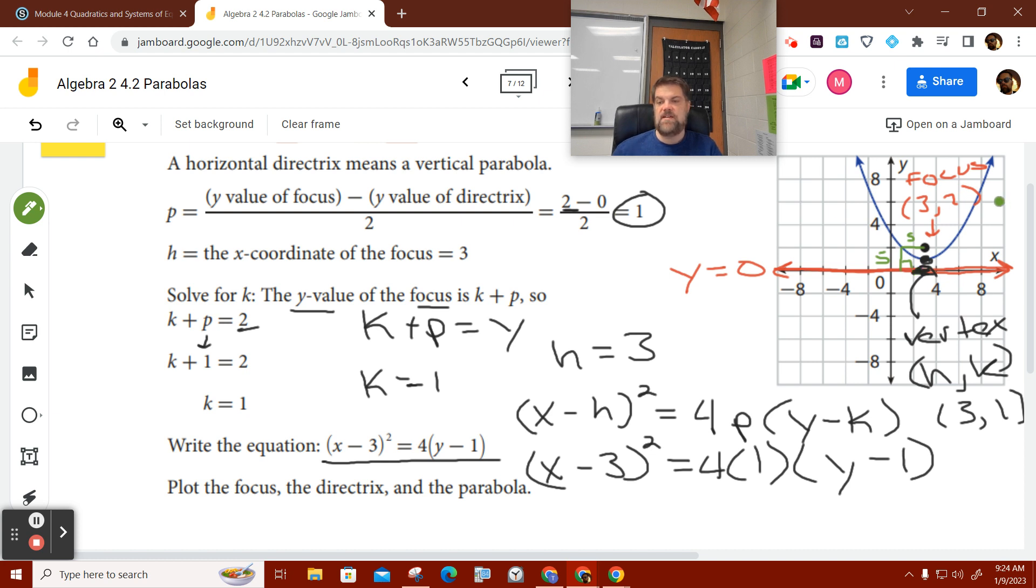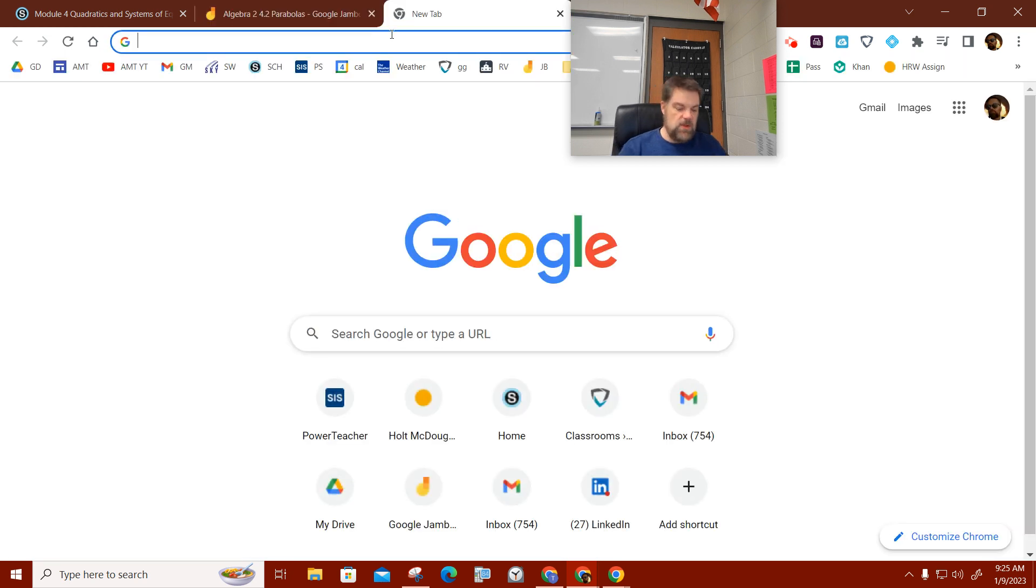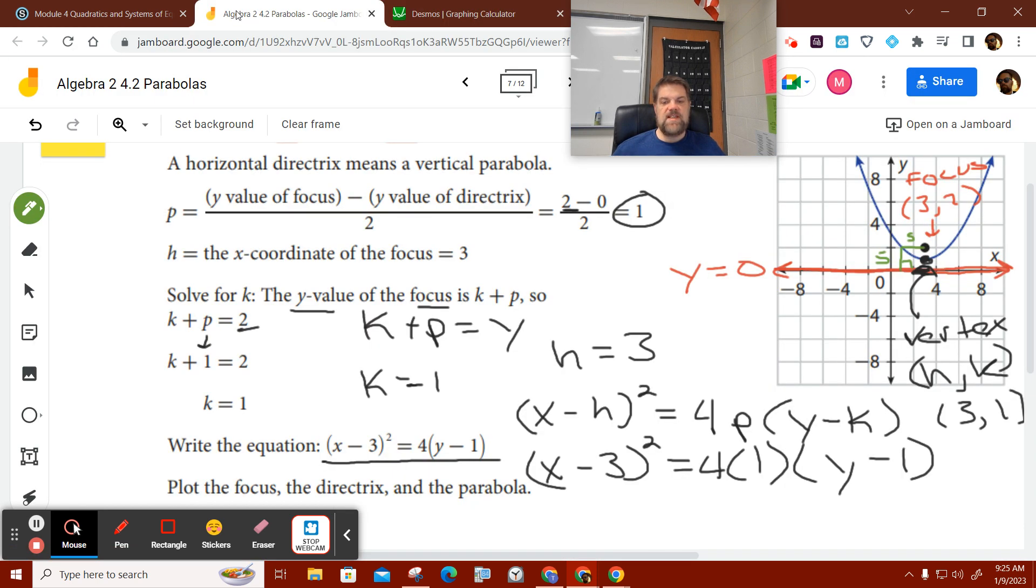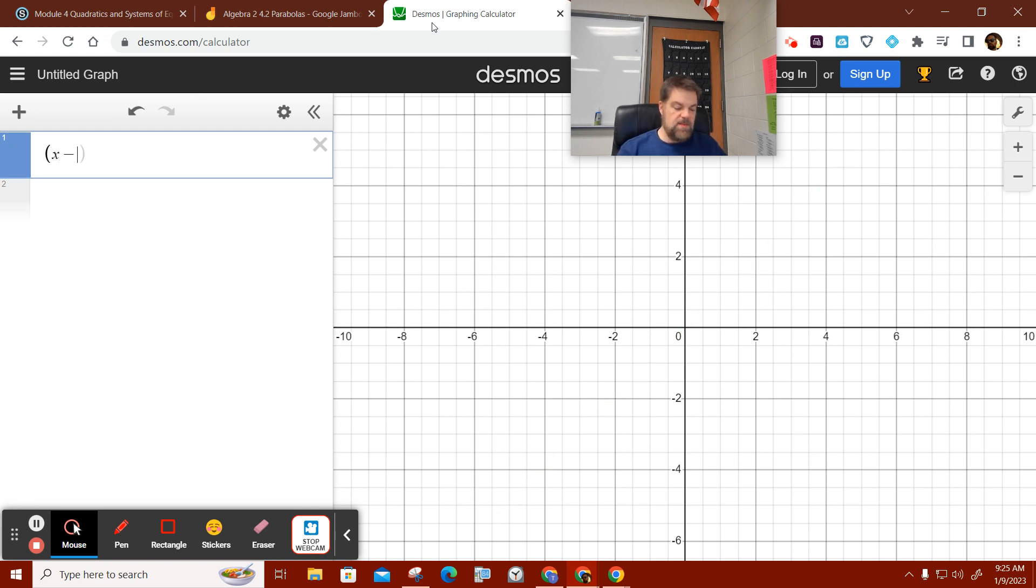Any questions on that? Now we can just graph this in our graphing calculator. This one is easy because it's a function. So I'm going to do this in Desmos. So Desmos is one way that you could graph this. And so we said it was X minus three squared is equal to four times the quantity Y minus one.